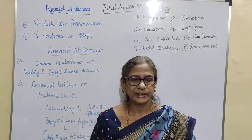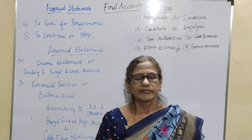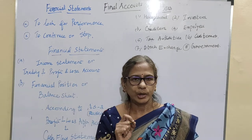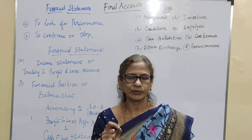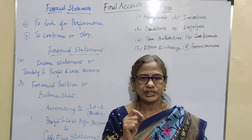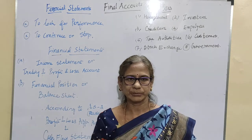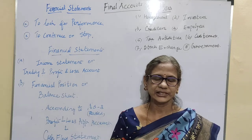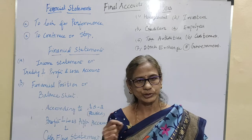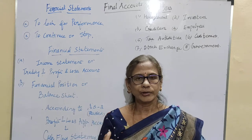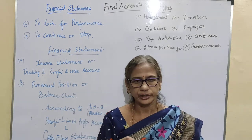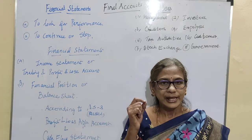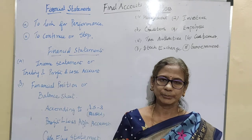Today we are going to see the final accounts. Final accounts is nothing but the performance report for the financial period, probably 12 months. Most follow 12 months as a financial year: 1st April to 31st March. Some take 1st January to 31st December. They run the business for this 12-month financial year and want to find out their performance - whether to proceed or stop. The final account is the accounts prepared at the end of the year to find out the position of the business.